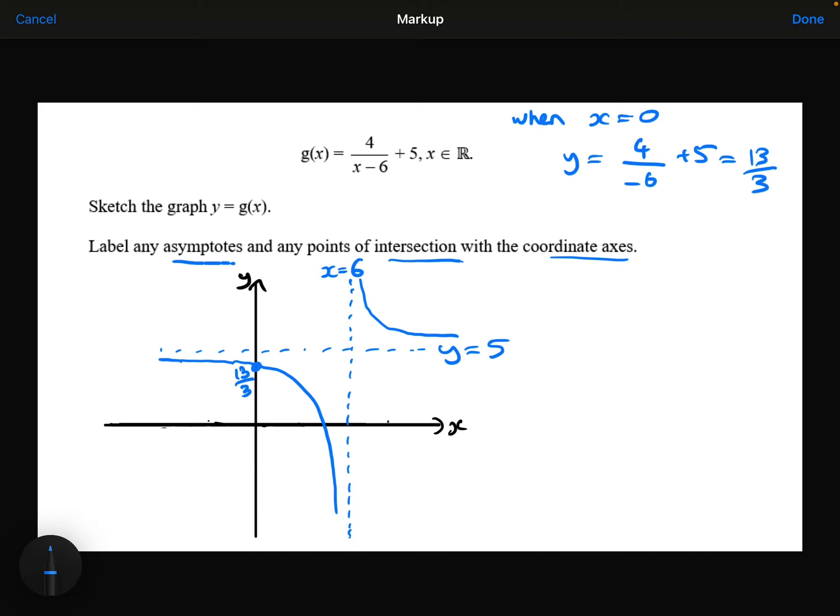Now to get the x-intercept, that's when y equals 0. So 0 equals 4 over x minus 6 plus 5. Multiply through by the x minus 6.